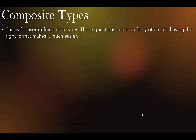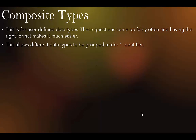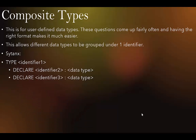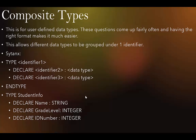Moving on to composite types — user-defined data types. These questions come up fairly often, and having the right format makes it much easier to get your points. This allows different data types to be grouped under one identifier. The syntax is: TYPE Identifier1, then inside you list identifiers with their data types, then ENDTYPE. For example: TYPE StudentInfo with Name as STRING, GradeLevel as INTEGER, IDNumber as INTEGER — all grouped under StudentInfo.